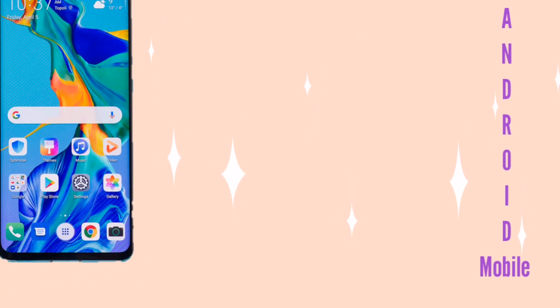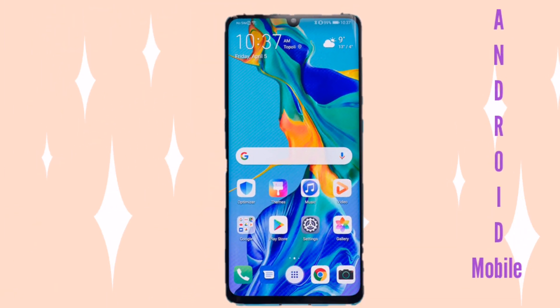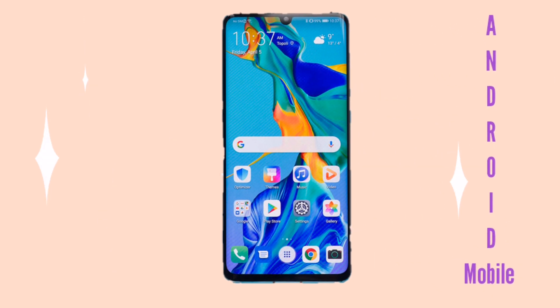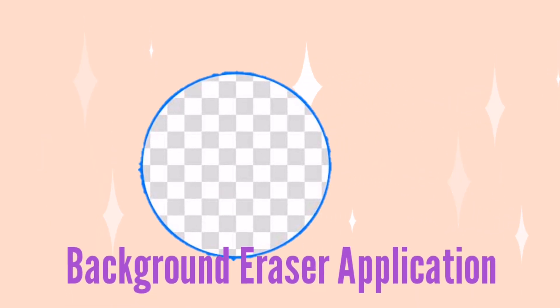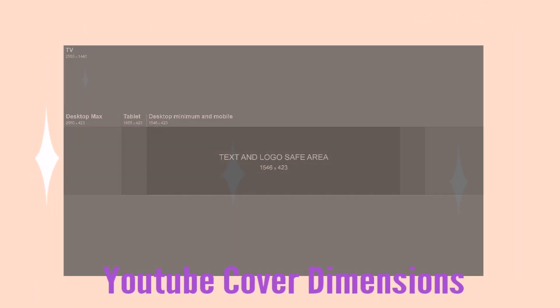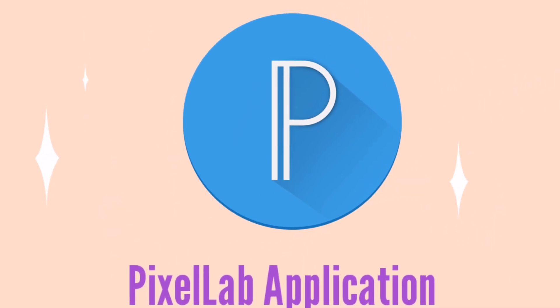I'll show you how to do this on your Android mobile phone. To make a banner using an Android mobile phone, you need to download the following applications from the Play Store. The first application is Background Eraser, and you also need to download the YouTube Cover Dimensions — this is very important. The second application is Pixel app.